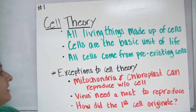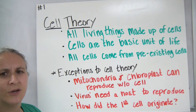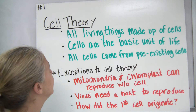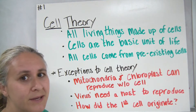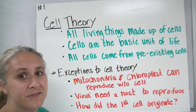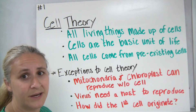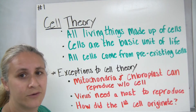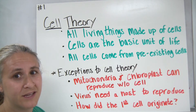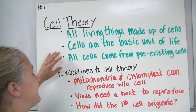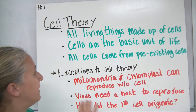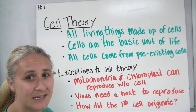Today's lesson is going to concentrate on cells. We usually begin talking about cells with the cell theory. The cell theory has three main parts to it. All living things are made up of cells. If it's a non-living thing, it would be made up of atoms. Living things are made up of cells. Cells are the basic unit of life, and all cells come from pre-existing cells.